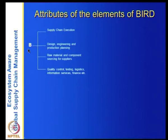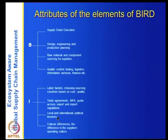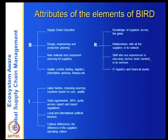These are the business functions of the service chain, which we call BIRD. The institutions include governments, labor factors, choosing sourcing countries based on cost and quality, trade agreements, multi-fiber agreement, quota access, export and import regulations, local and international tensions, cultural differences, and differences in suppliers' operating culture. The resources include knowledge of suppliers across the globe and relationships with all suppliers in the network, as well as staff experienced in executing various tasks.